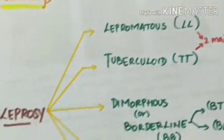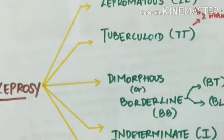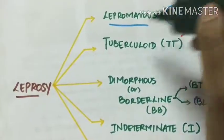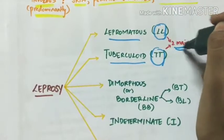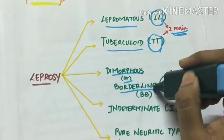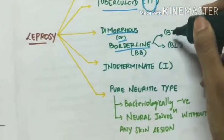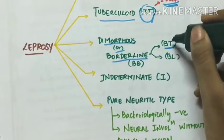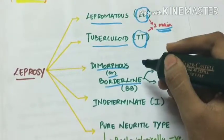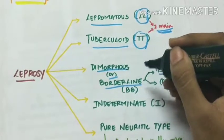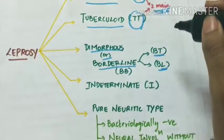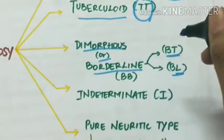Types of leprosy: it can be classified into four major types and one subtype. The two main types are lepromatous leprosy (LL) and tuberculoid leprosy (TT). The third is dimorphous, also called borderline, which is further divided into borderline tuberculoid and borderline lepromatous. These refer to lesions possessing characteristics of both tuberculoid and lepromatous types, and may shift depending on chemotherapy or alterations in host resistance.